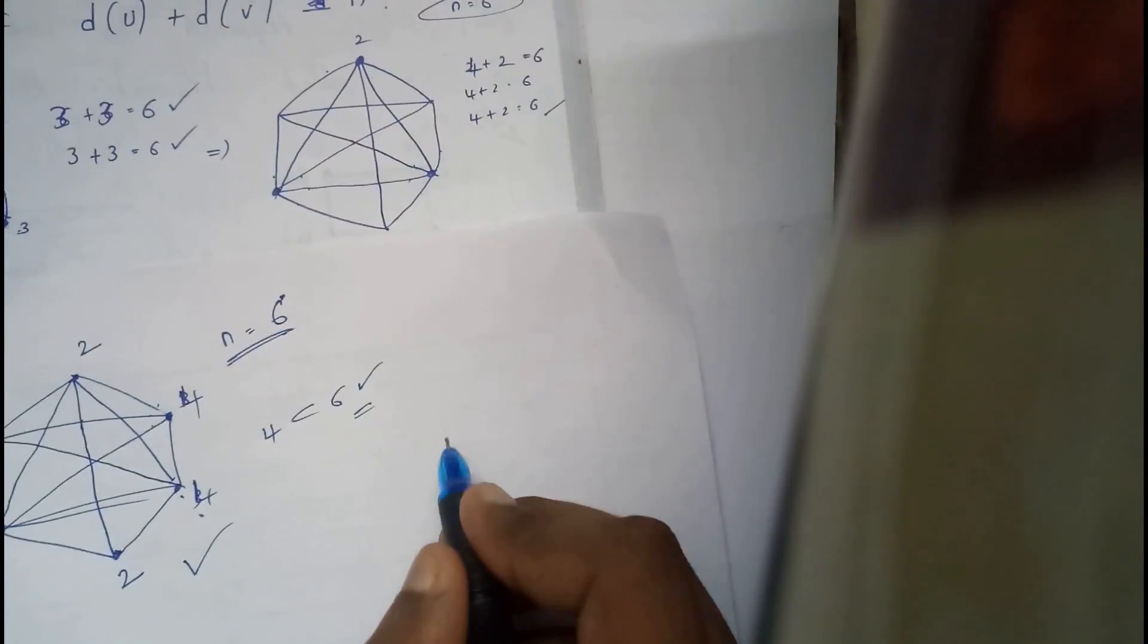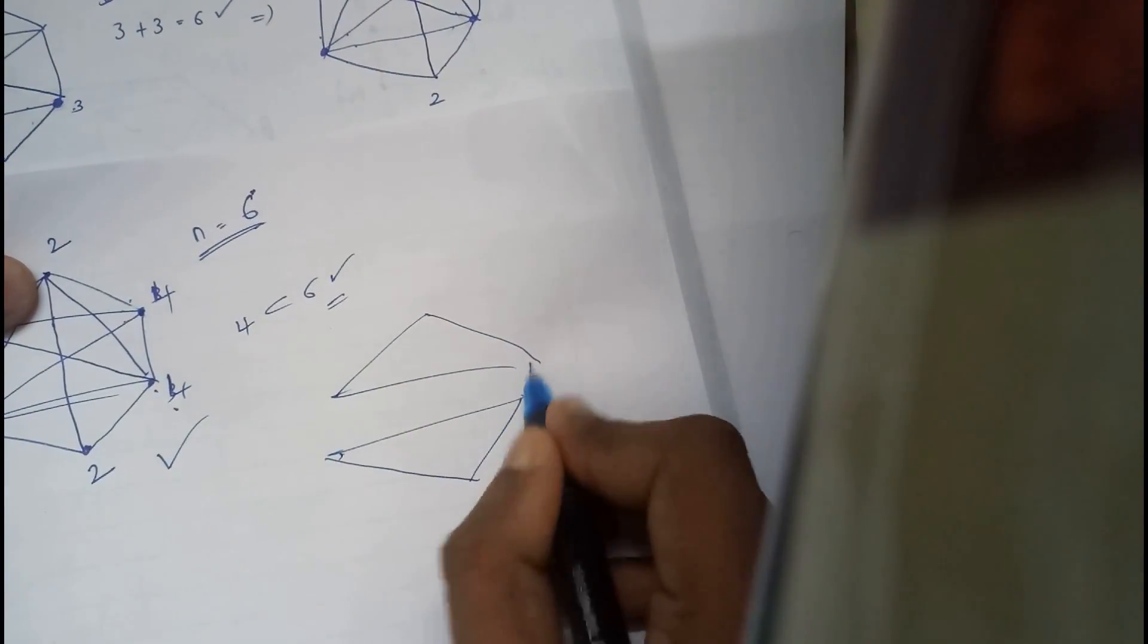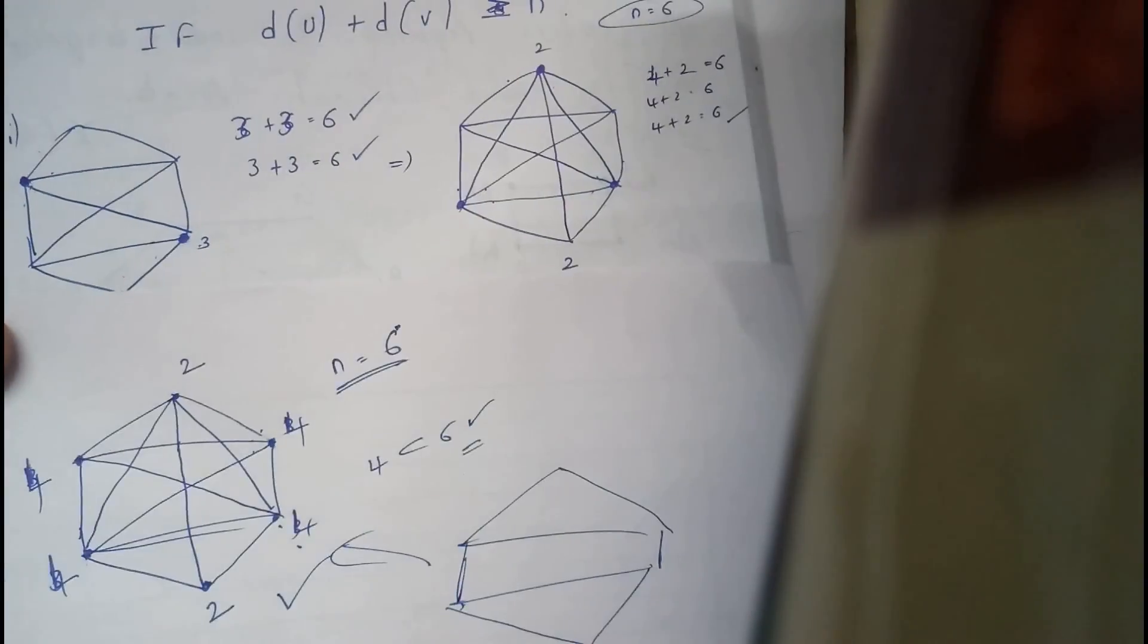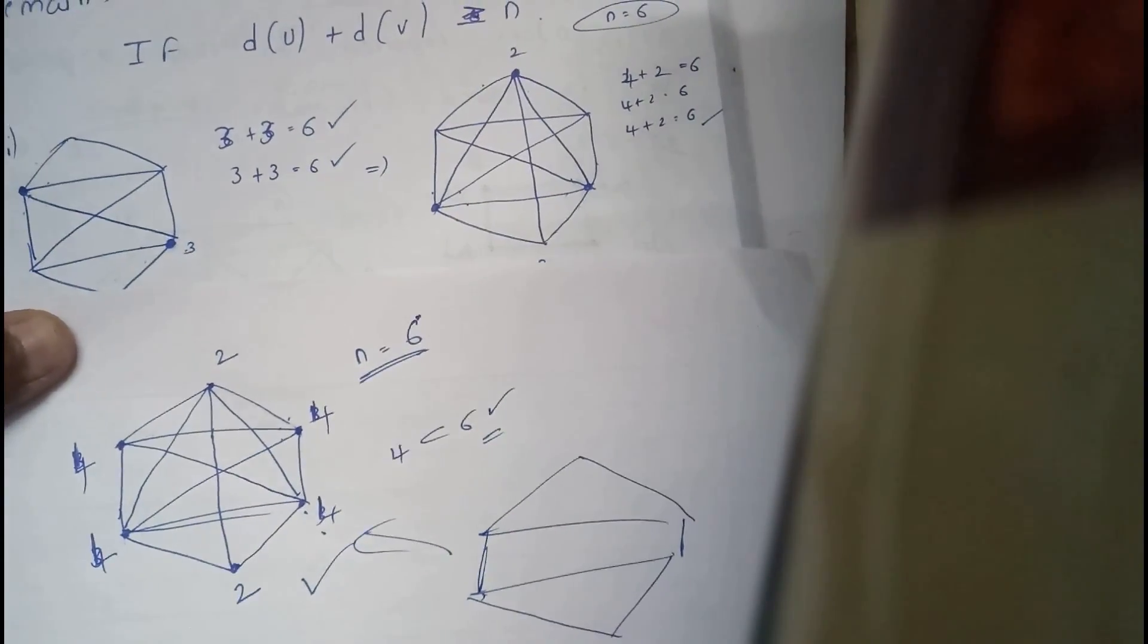The question was this. Of this graph, the Hamilton closure path is this. Thanks for watching. I hope this video helps you a lot.